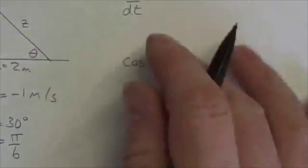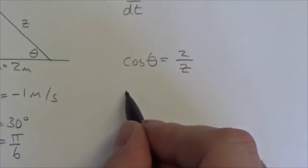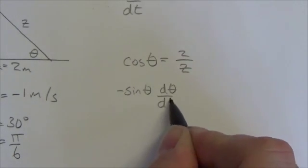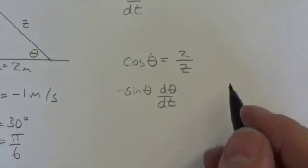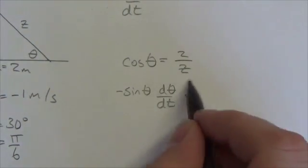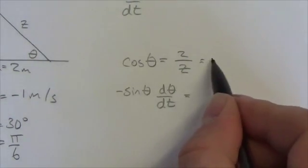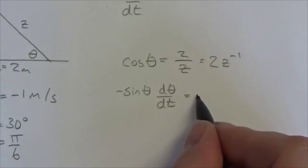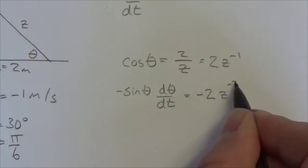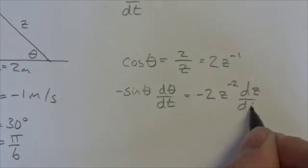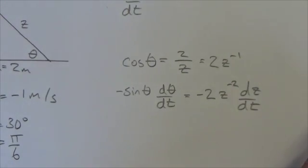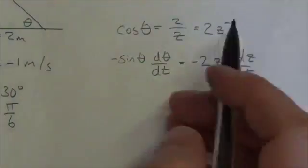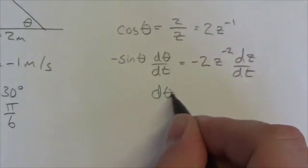Now, let's take a look at this. So the derivative of cosine is going to be negative sine of θ. But we got to take the derivative with respect to time because we're looking at how these things are changing in time here. And that's going to equal, now remember, this is the same as 2 times z to the negative 1. So that negative is going to come down negative 2, and then this will become z to the negative 2 dz/dt. dz/dt because we took the derivative with respect to time implicitly.